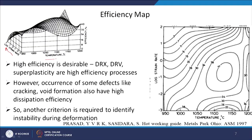A three-dimensional contour map is constructed with log strain rate on one axis, temperature on another axis, and efficiency on the z-axis. Taking a two-dimensional section gives contours showing efficiency at different processing conditions. For example, 41 means 41 percent efficiency, then 34, 38 percent, and so on. These are called efficiency maps. High efficiency is desirable because DRX, DRV, and superplasticity are all high-efficiency processes.